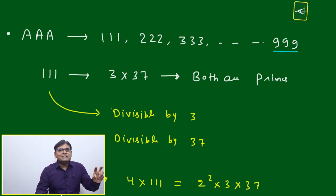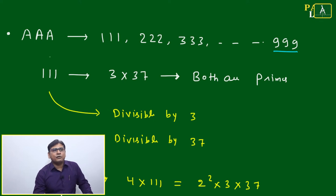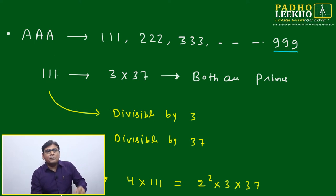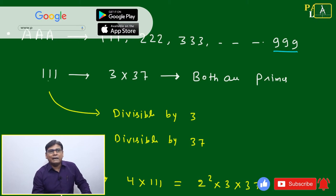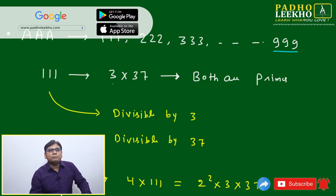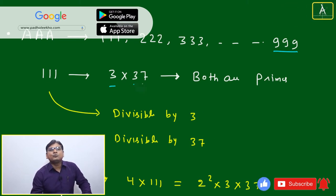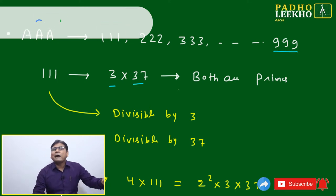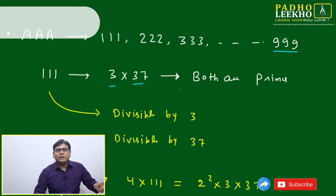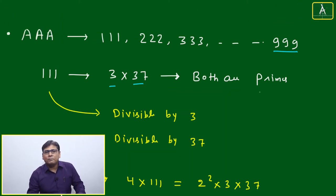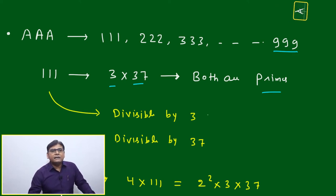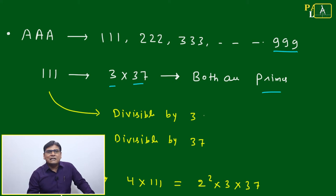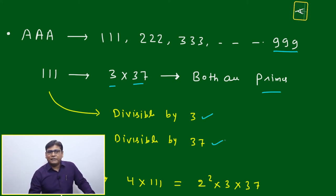Let us understand what is peculiar about this kind of number. Taking the smallest number in this format, 111, we can prime factorize it as 3 × 37. We cannot factorize further because both 3 and 37 are primes, so further factorization is not possible. By this we can say 111 is divisible by 3 and divisible by 37.